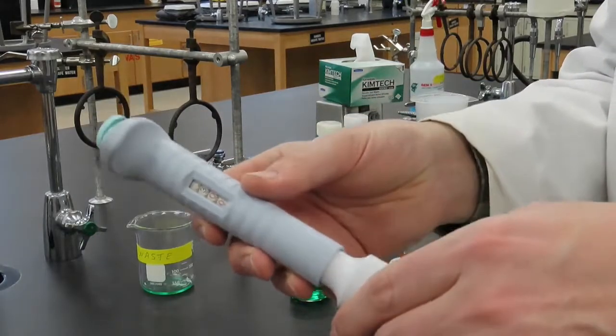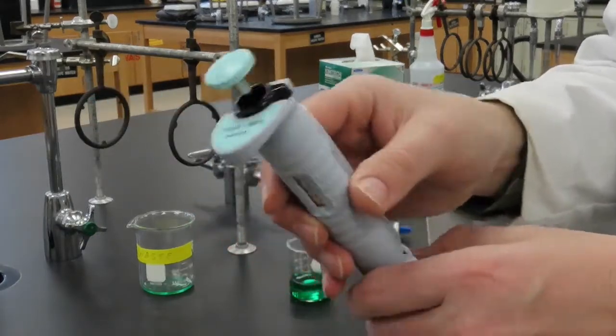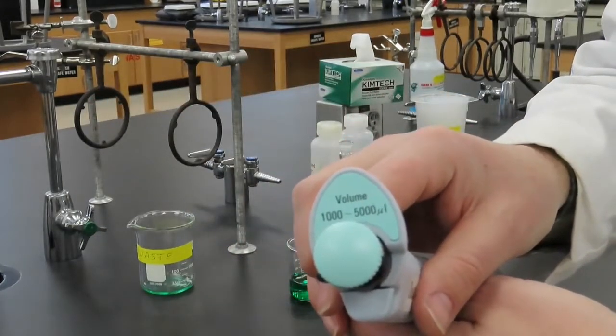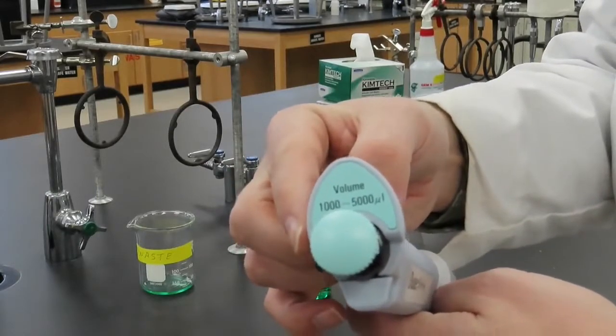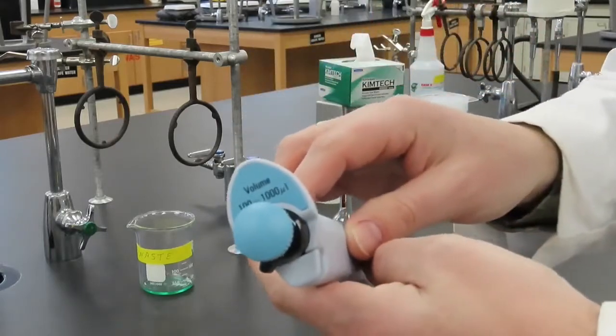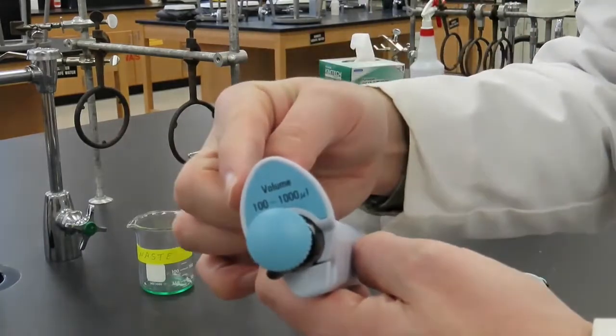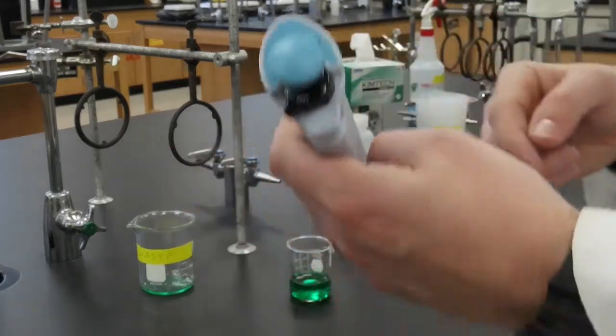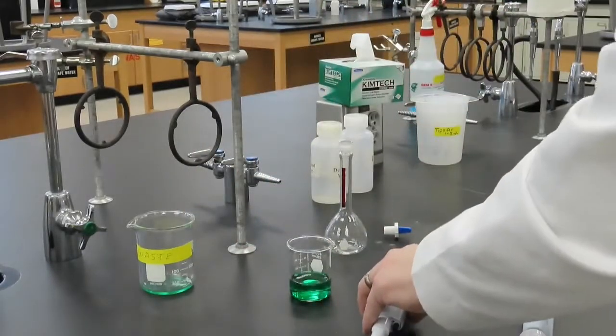Micropipettes come in a variety of sizes, which differ in their volume ranges. We will commonly use two types. The larger pipette has an adjustable volume range from 1,000 to 5,000 microliters. The smaller pipette has an adjustable volume range from 100 to 1,000 microliters. In spite of the difference in size, the two micropipettes operate in exactly the same way.